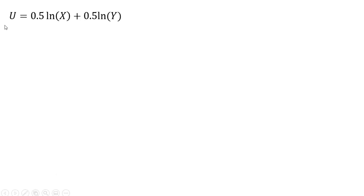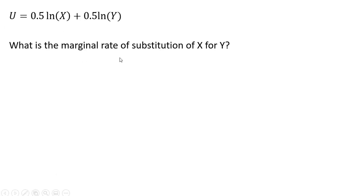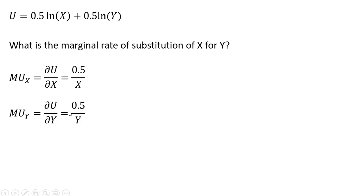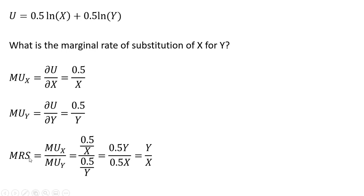In our last example, we have a different utility function. What is the marginal rate of substitution of X for Y? We're going to get the marginal utility of good X by differentiating, which gives us 0.5 divided by X. And the marginal utility of good Y gives us 0.5 divided by Y. Forming the marginal rate of substitution and simplifying, the 0.5s cancel, and we're just left with Y over X.